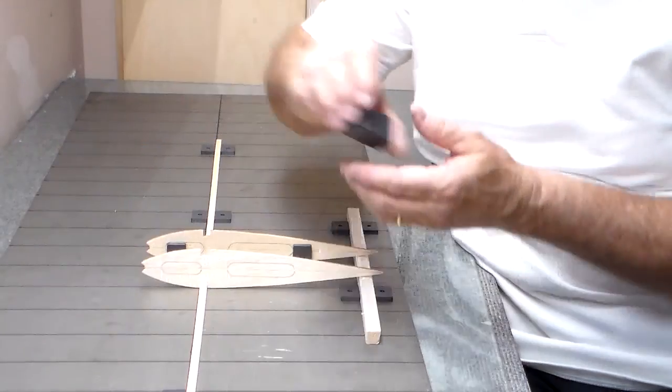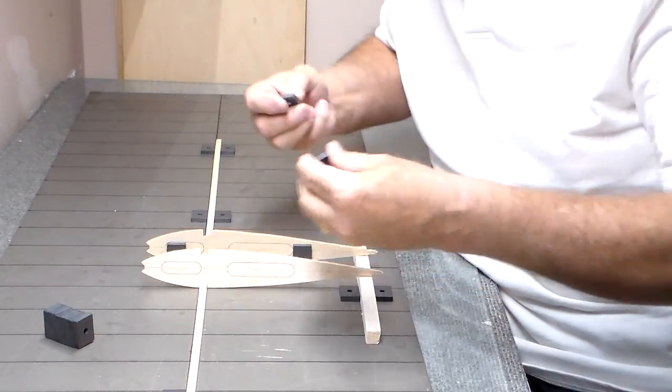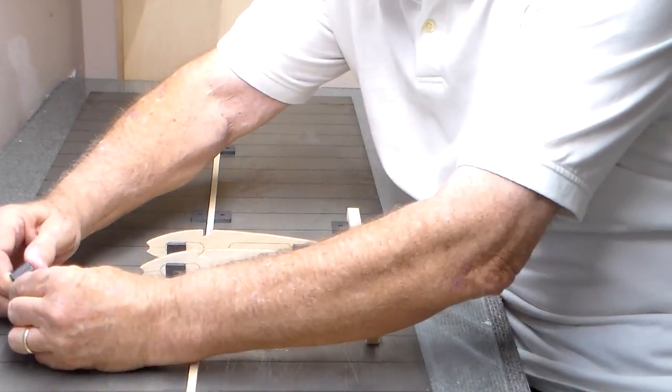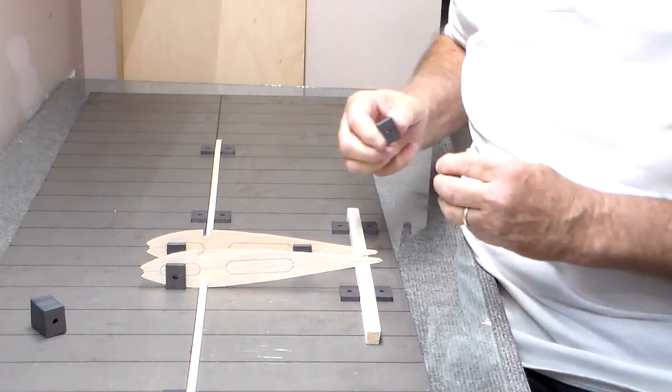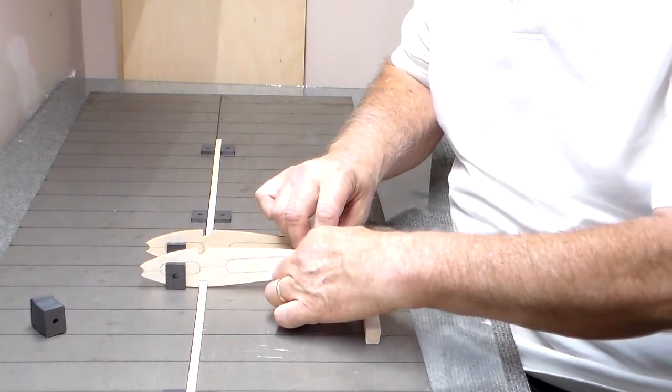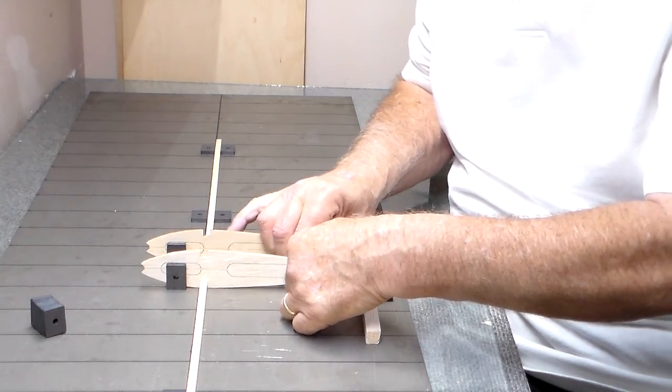You want to make sure that you get the rib pressed down again so the butt end of it is against this piece, just touching the one half by one half.